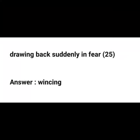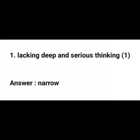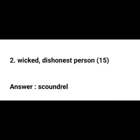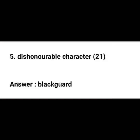Below is a word web. Fill each circle with the word used to describe Mr. Jorath. The meanings given below will help you. The number after each meaning shows the paragraph where the word is found. Lacking deep and serious thinking: narrow. Wicked, dishonest person: scoundrel. Dishonest person: rascal. Dishonest man: knave. Dishonorable character: blackguard. Now turn to page number 162.